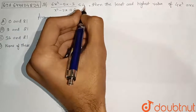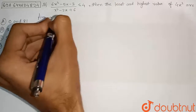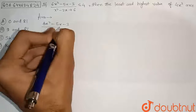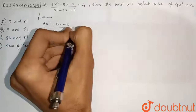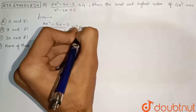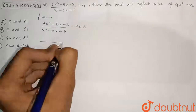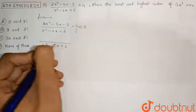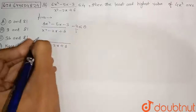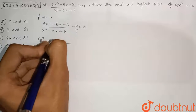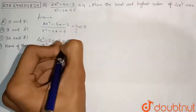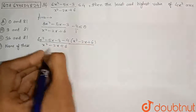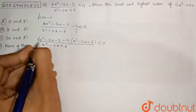First, we take 4 to the left hand side, so we write: (6x² - 5x - 3) / (x² - 2x + 6) minus 4 ≤ 0. Taking the LCM as (x² - 2x + 6), we perform cross multiplication to get: [6x² - 5x - 3 - 4(x² - 2x + 6)] / (x² - 2x + 6) ≤ 0.